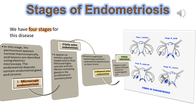Stage 3: Advanced active endometriosis, presenting as pigmented, hemorrhagic, and fibrotic endometriotic spots, known as classic lesions. Stage 4: Healed endometriosis, appearing as white nodules or a flattened fibrotic scar containing glands only.